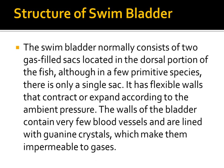The swim bladder normally consists of two gas-filled sacs located in the dorsal portion of the fish, between the gut and the kidneys. In a very few primitive fishes there is only a single sac. It has flexible walls that contract or expand according to ambient pressure. The walls contain very few blood vessels and are lined with guanine crystals, which make them impermeable to gases. By adjusting the gas-pressurizing organ using the gas gland or oval window, the fish can obtain neutral buoyancy across a large range of depths.